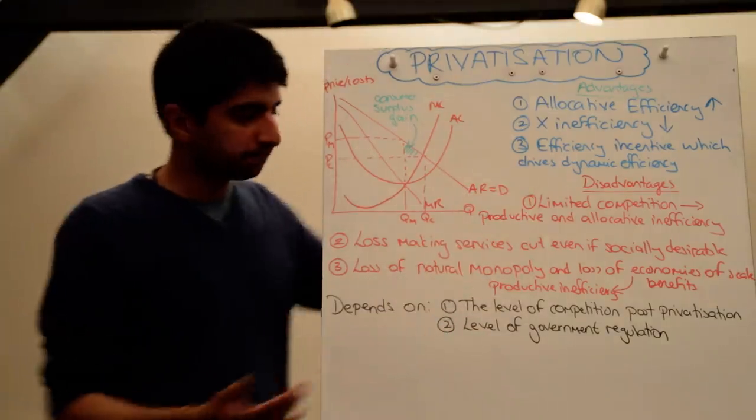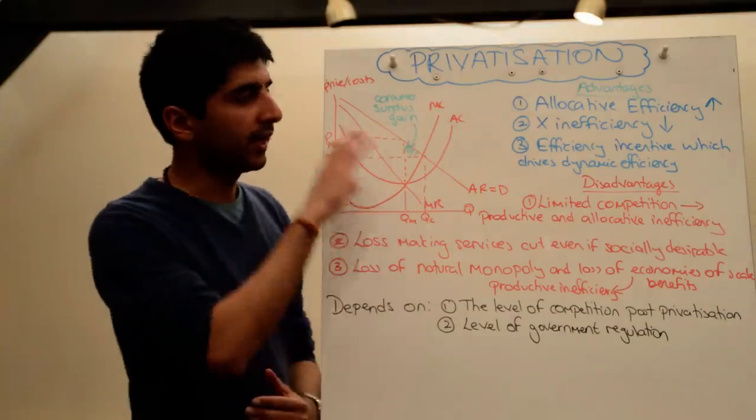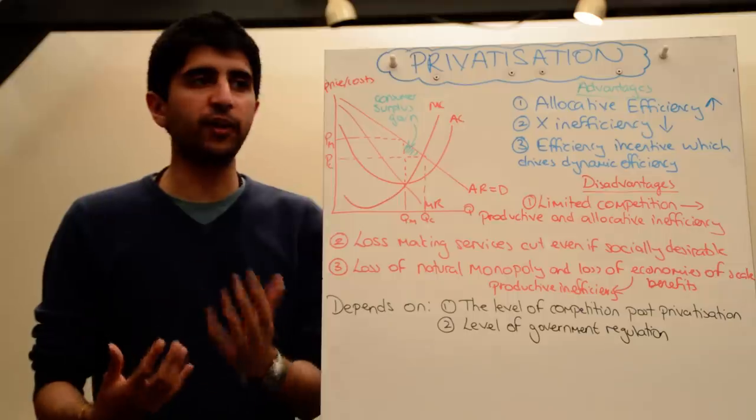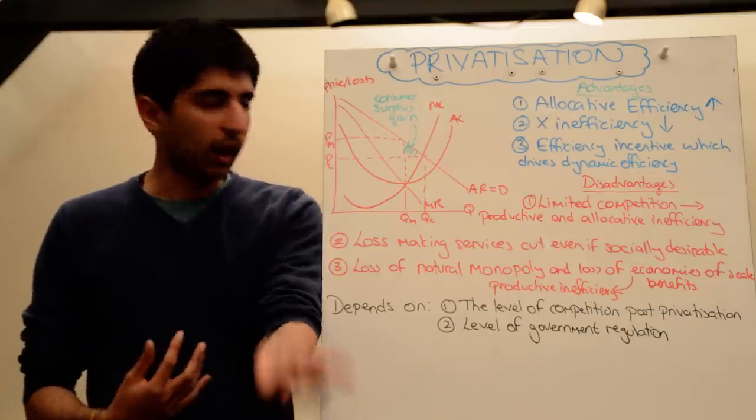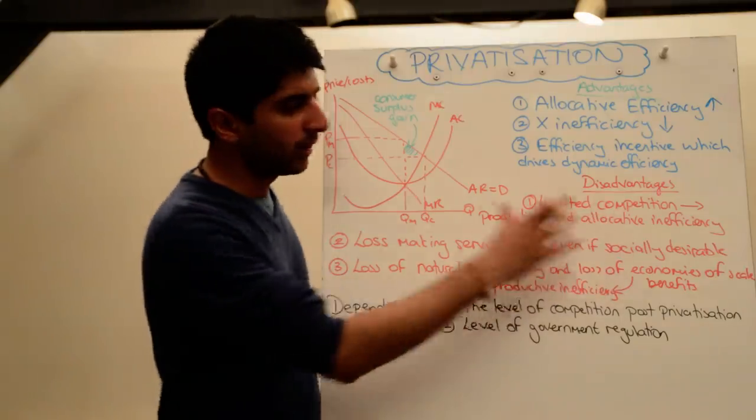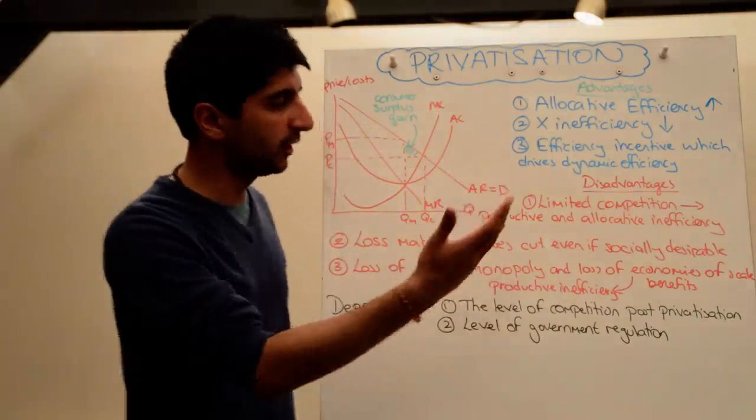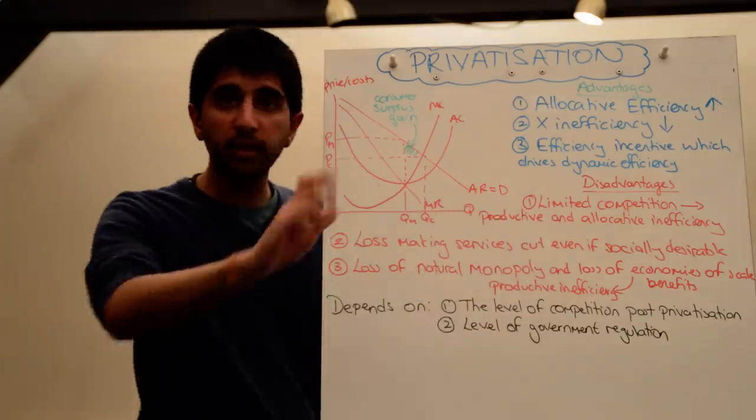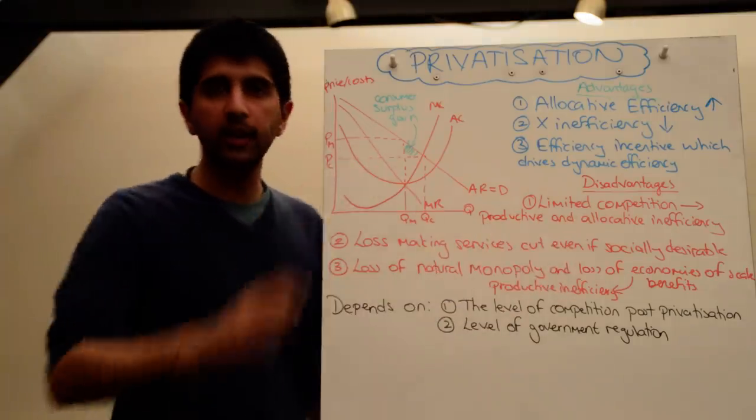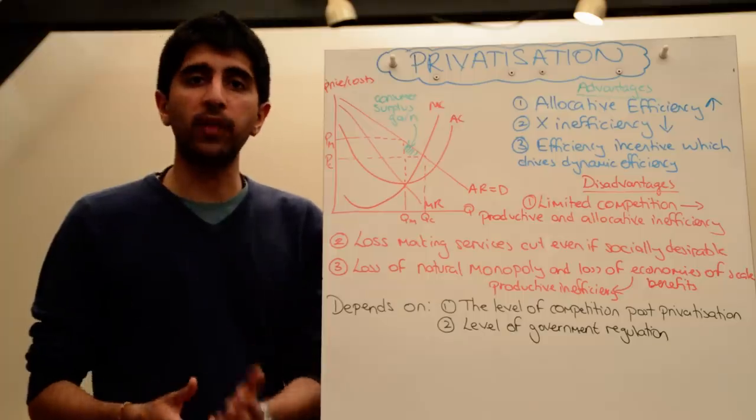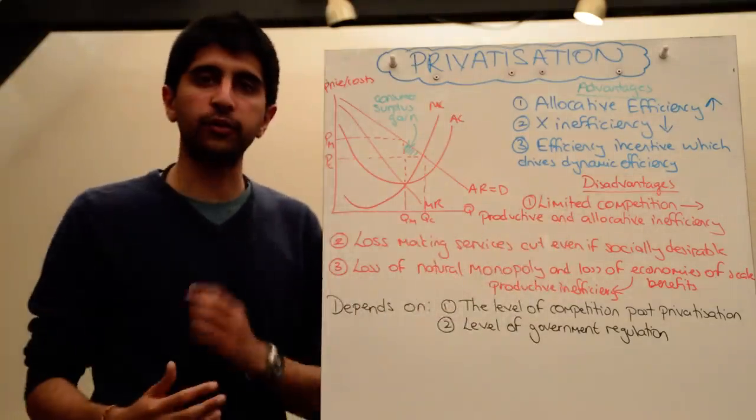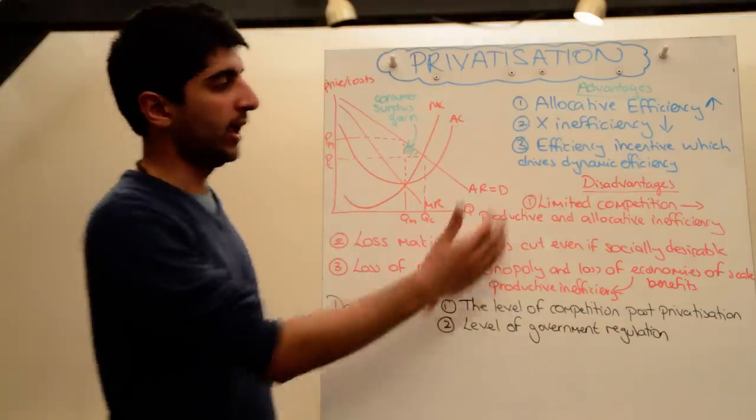But there are some problems here. We're making an assumption that as soon as the government privatises an industry, that there is going to be a flocking of firms to actually enter the industry. A reduction in barriers, yes. But, is there really going to be competition straight away? There might be limited competition, in which case there could well be productive inefficiency. Firms are not going to be operating at the minimum point on the average cost curve. They don't need to if there is limited competition. They don't need to drive down their costs as much as necessary if competition is limited.